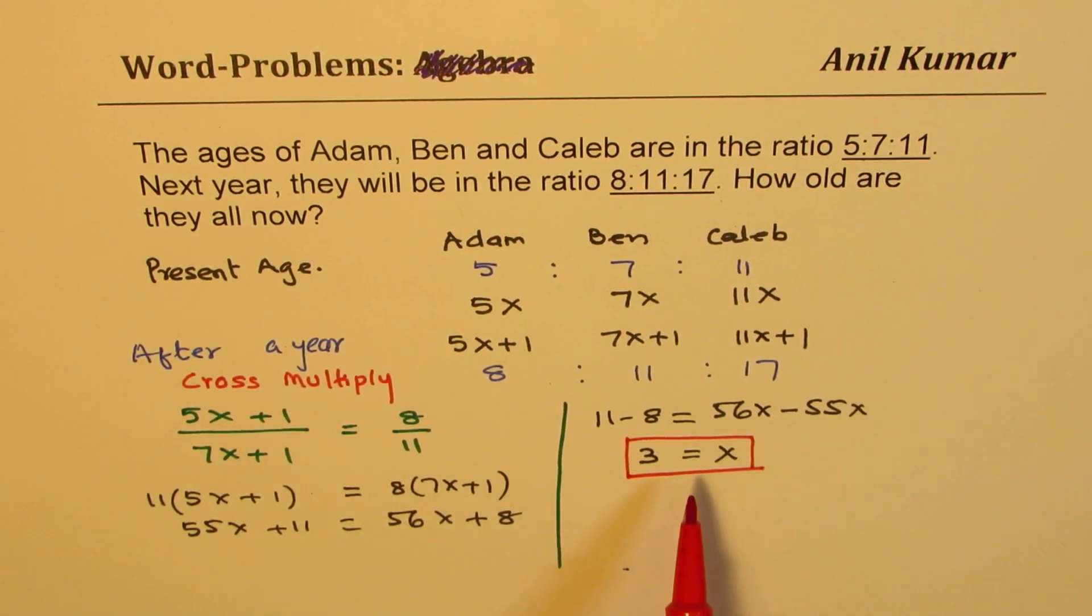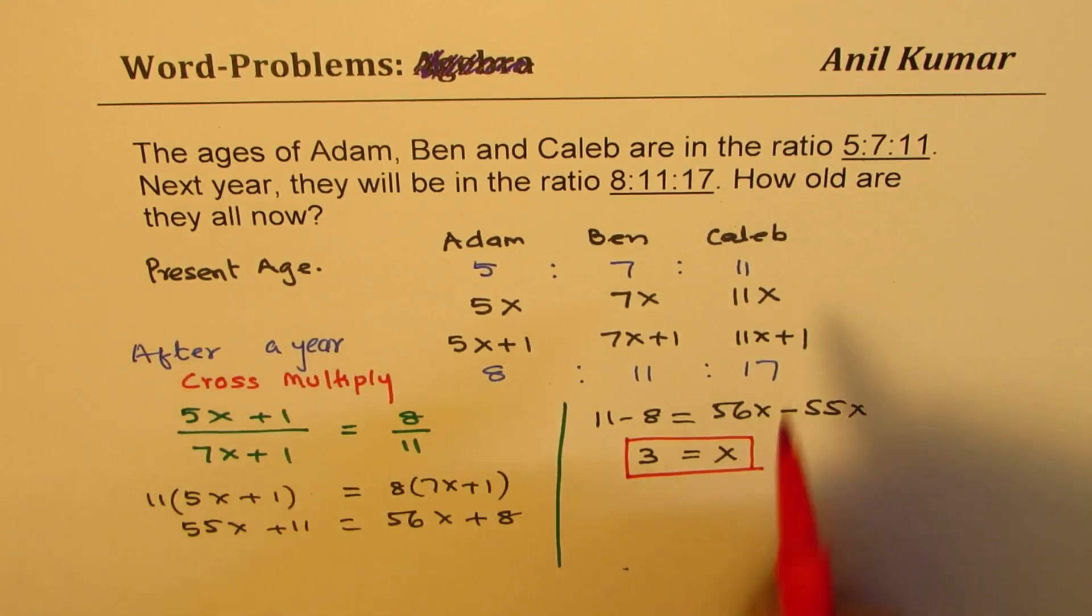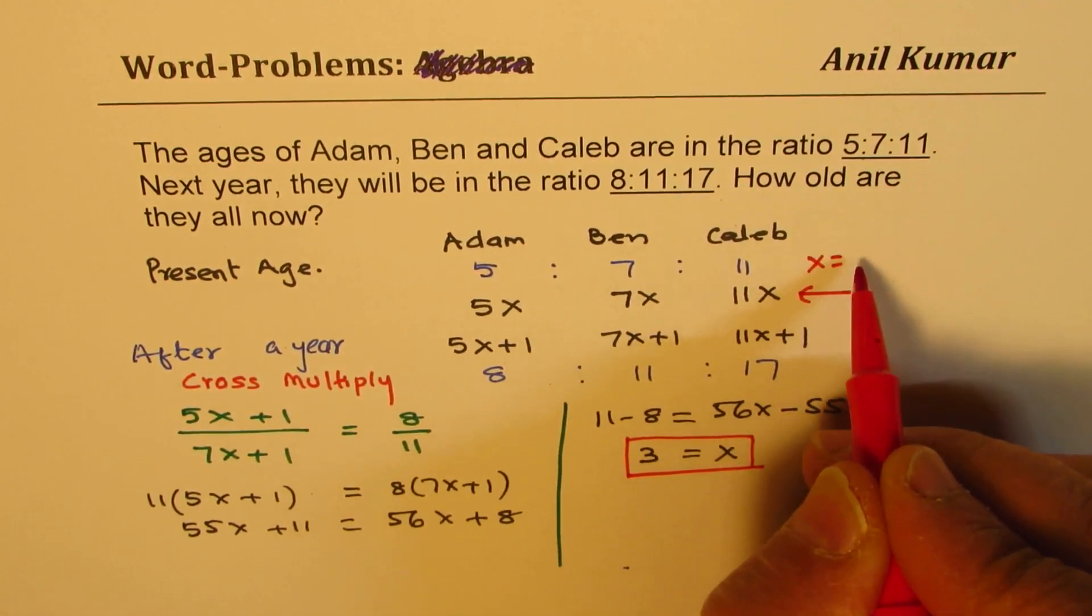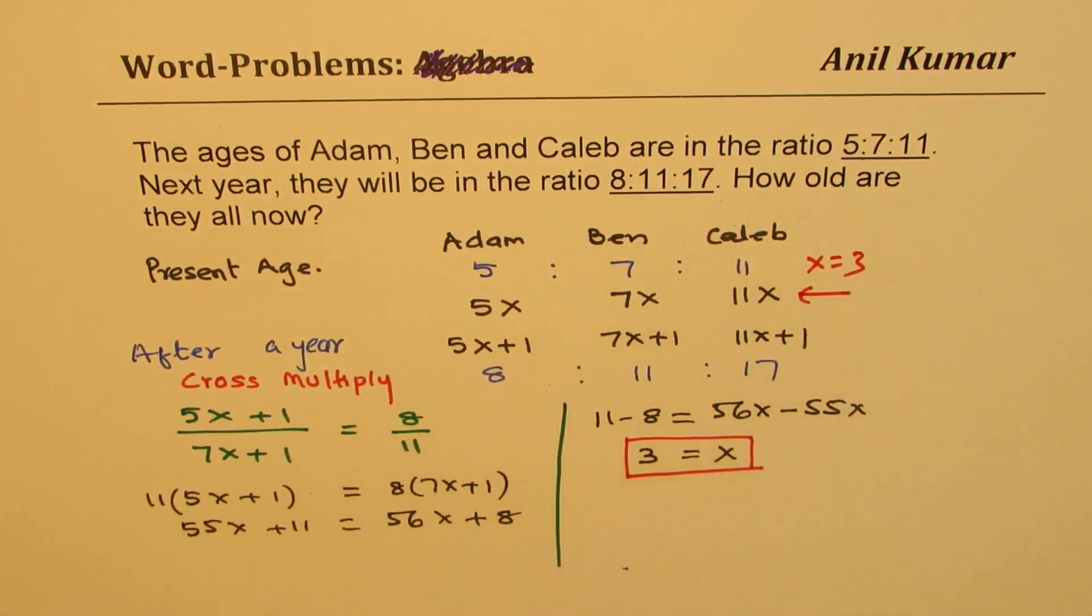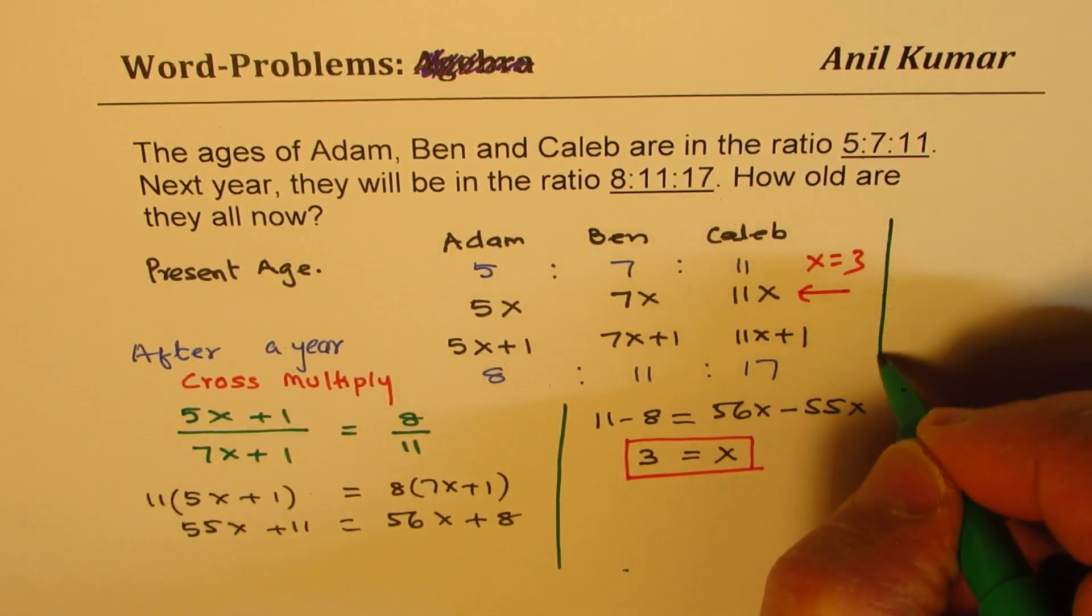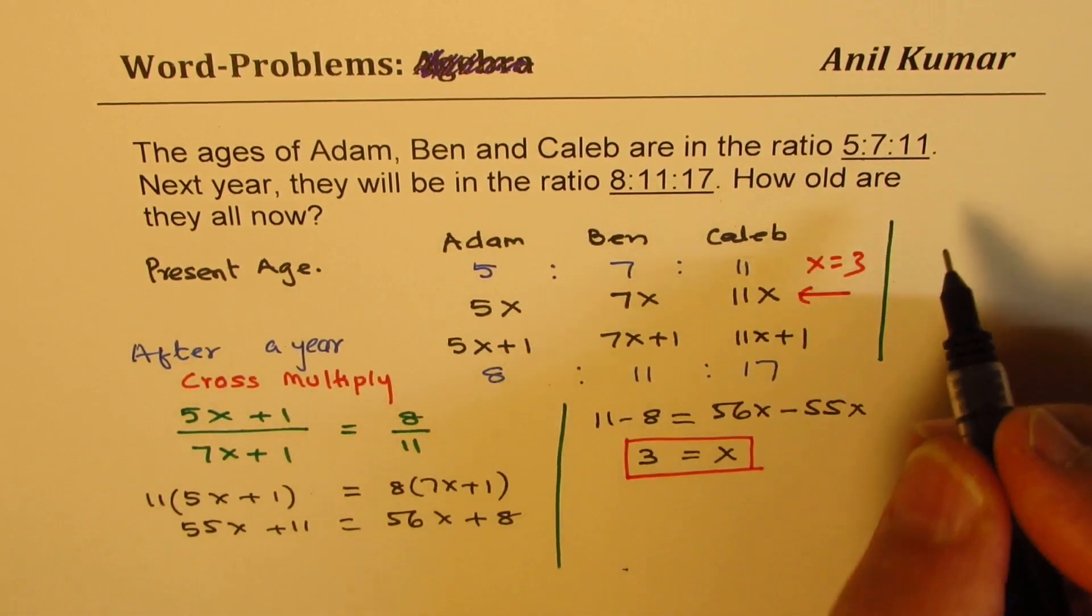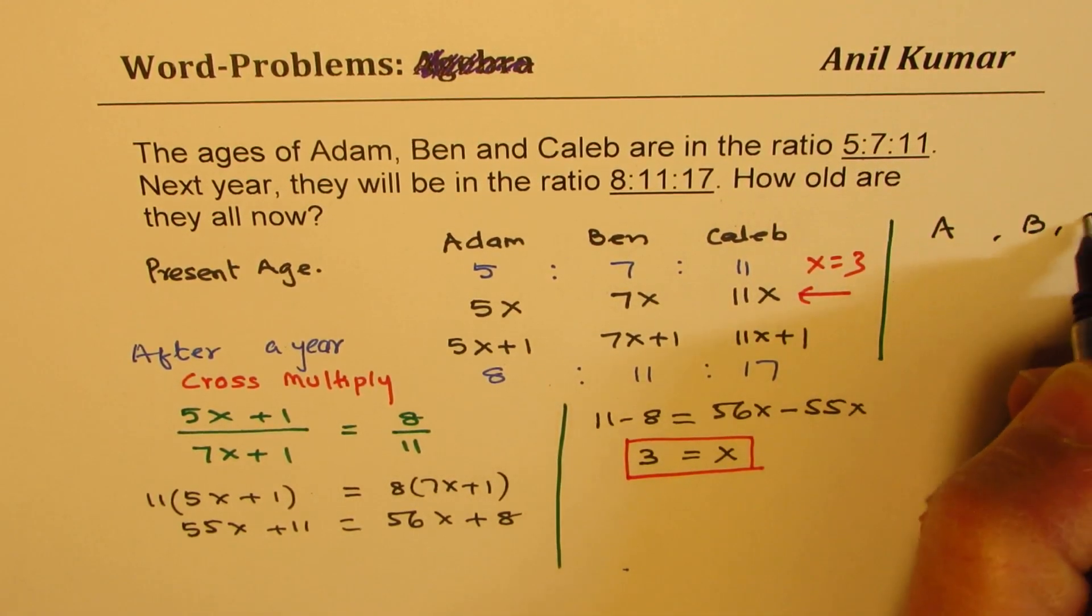Now once we know what x is, we can find their present age by substituting x equals to 3 here. So when I substitute x equals to 3, I get my solution. The three ages are what? Let's call them A, B and C.